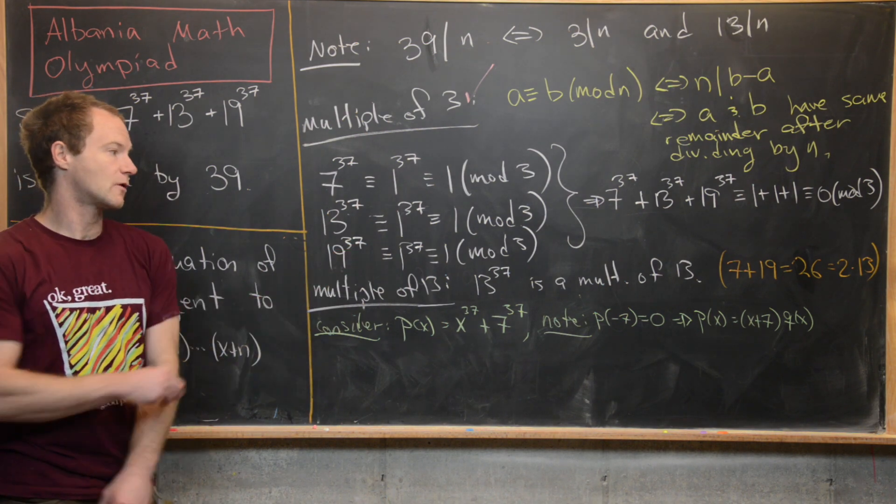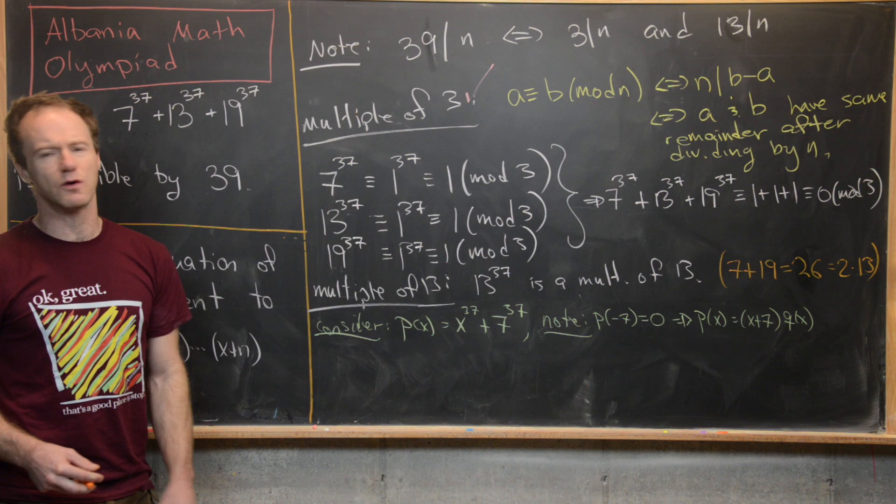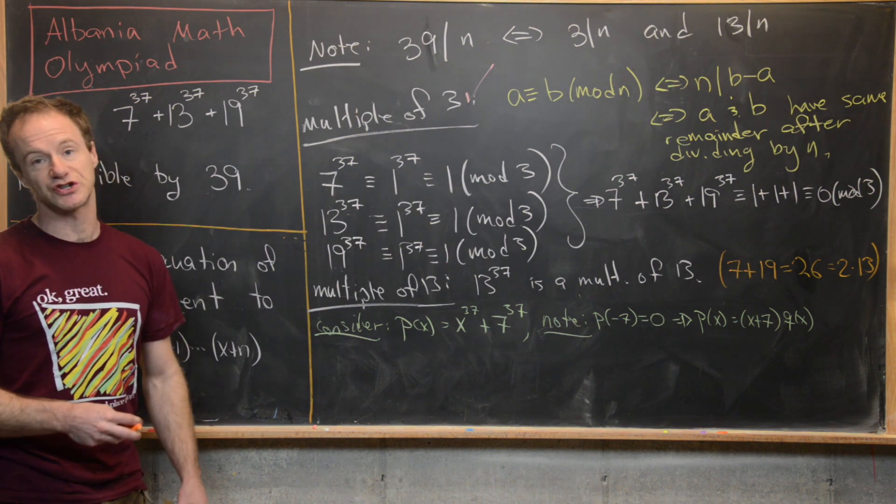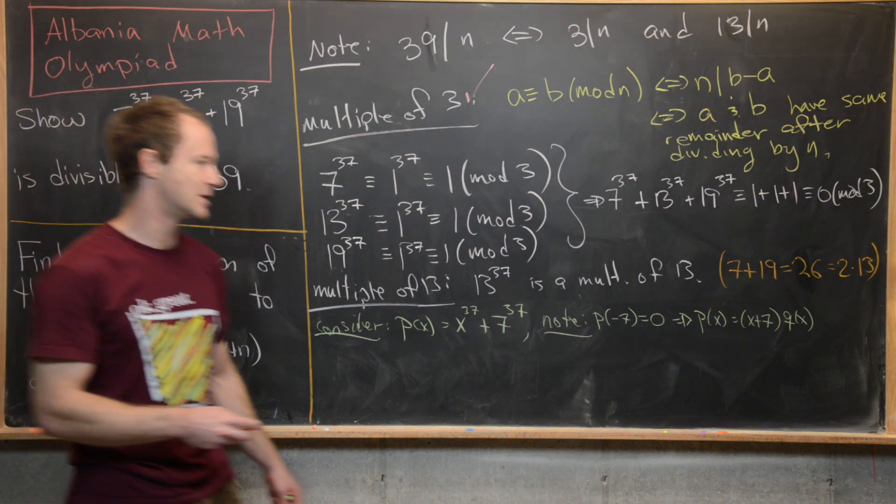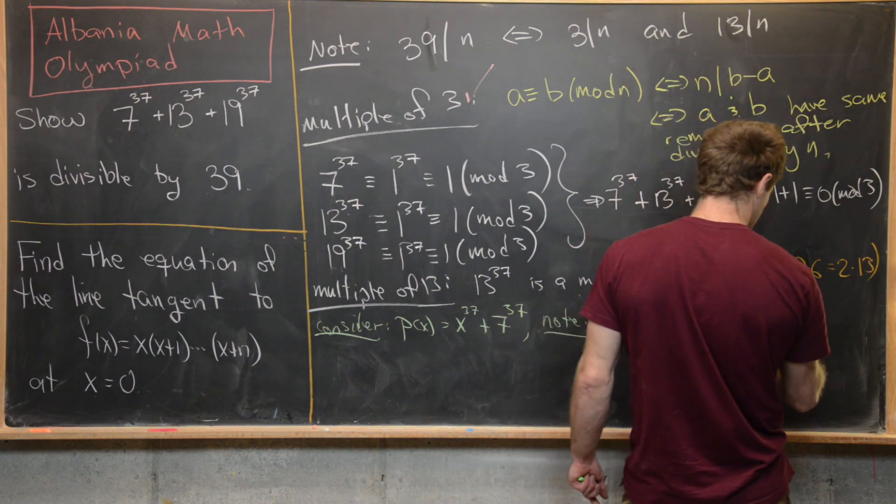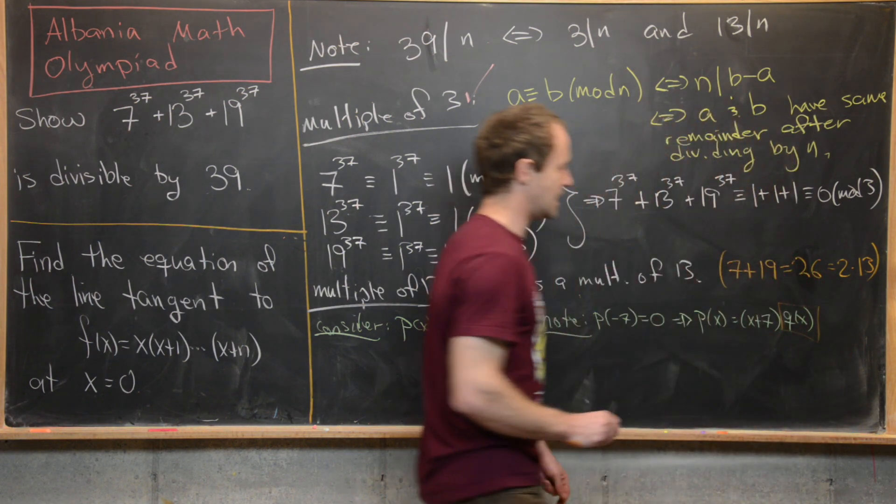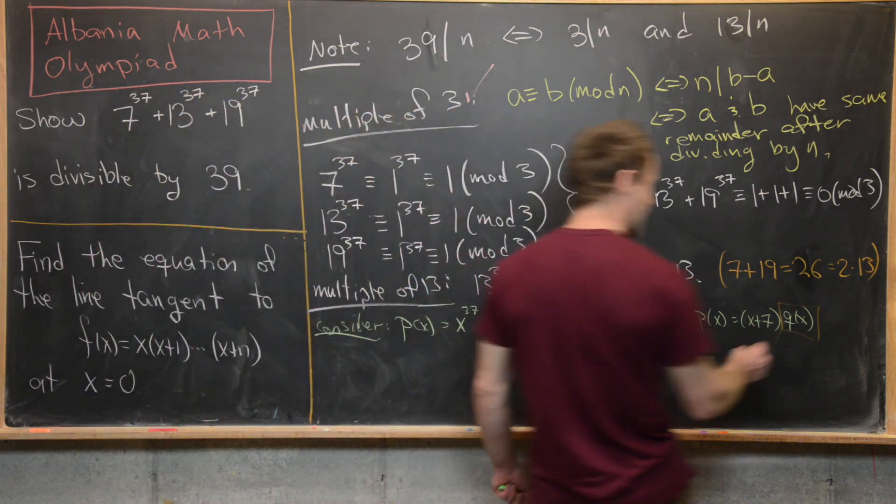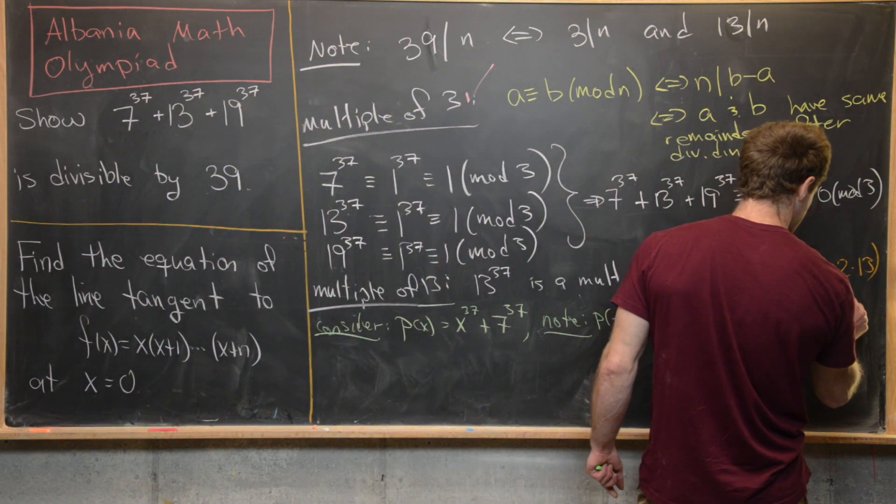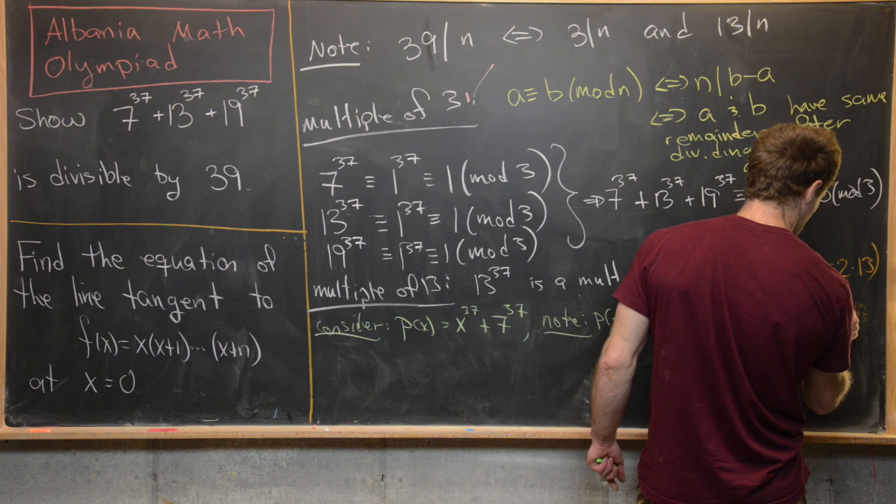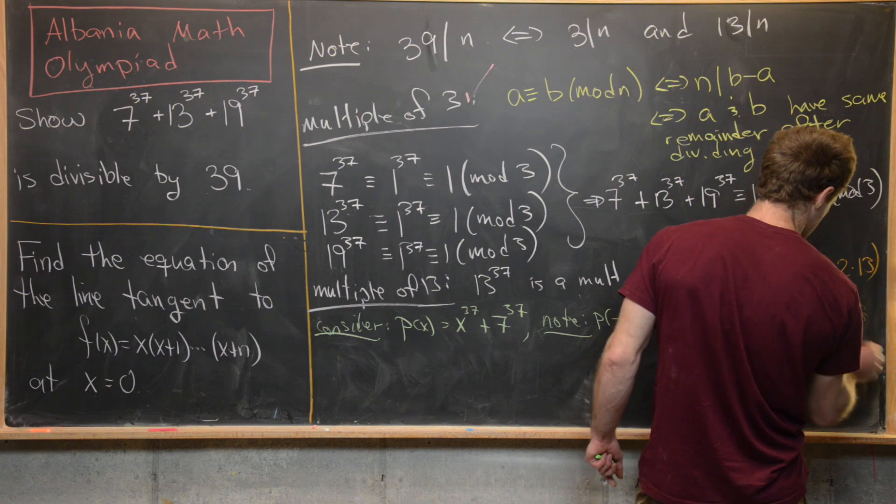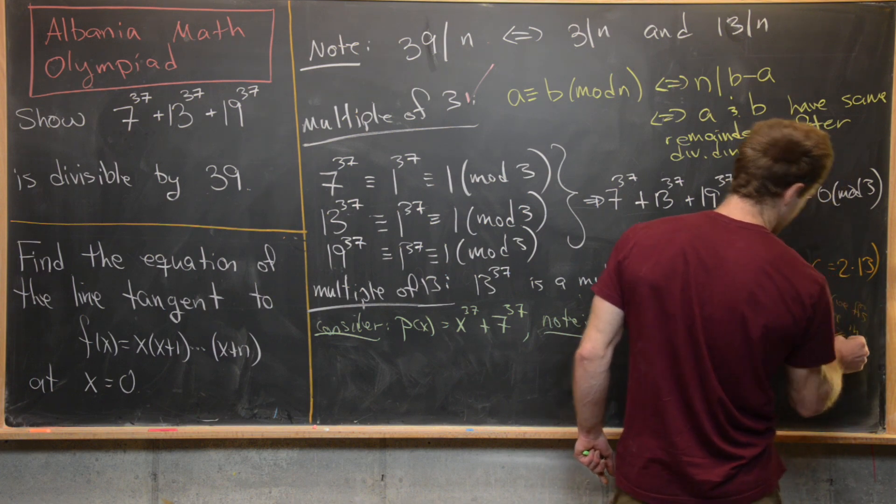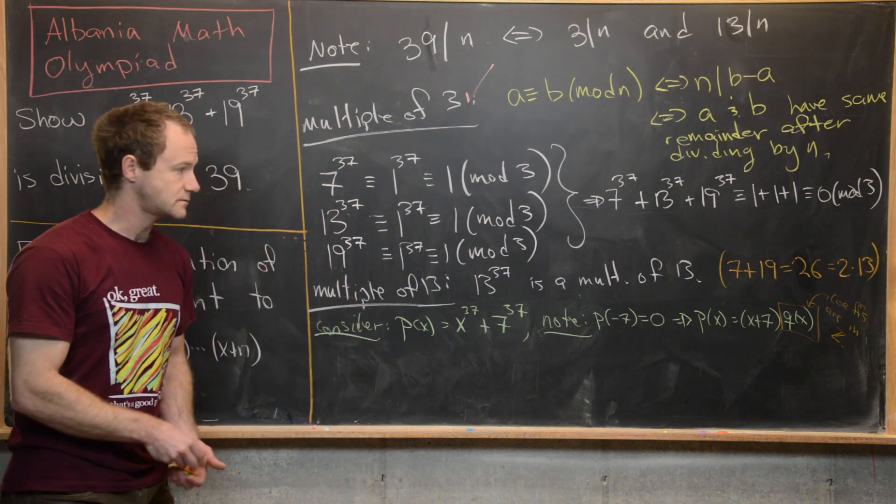But a priori, we don't know that q(x) has coefficients in the integers, which is actually pretty important for our setup. But there are some results in the theory of factorization of polynomials that will say that these coefficients are in the integers. So maybe we'll just write it like that.